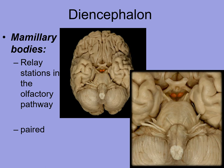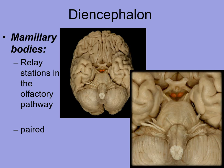The mammillary bodies are relay stations for the olfactory pathway. They are paired, so there are two of them, as you can see highlighted and enlarged. The olfactory bulbs receive sensory information from the nasal cavity — olfactory being the sense of smell. The olfactory tracts then take those impulses received from the olfactory bulb and send them to other sections of the brain for interpretation.